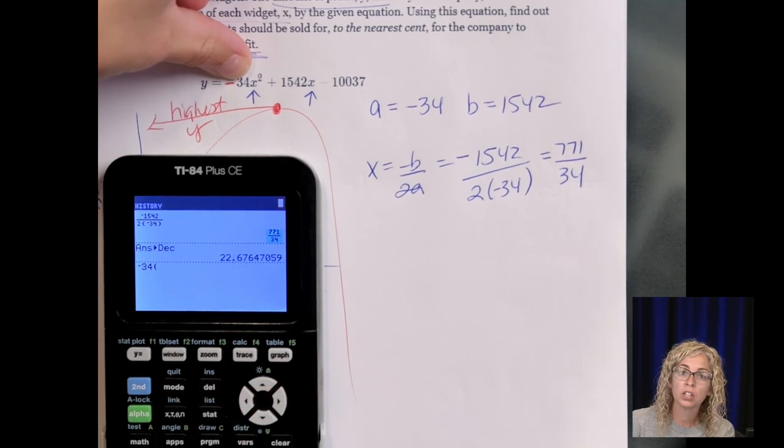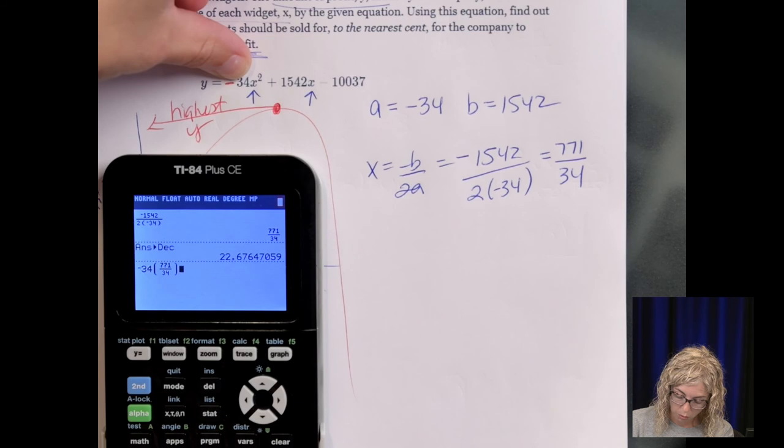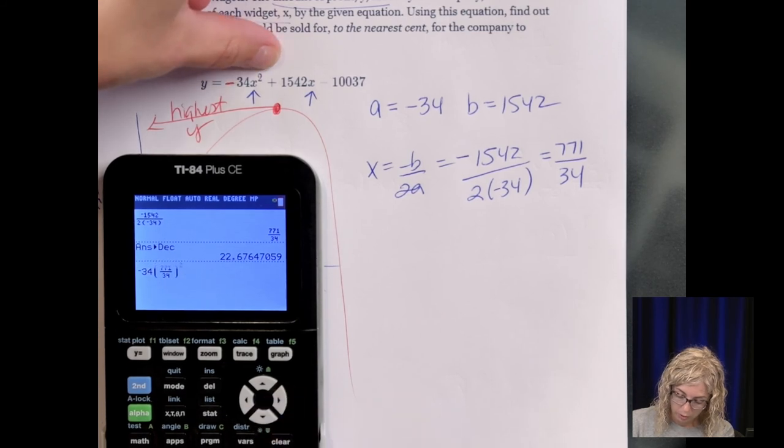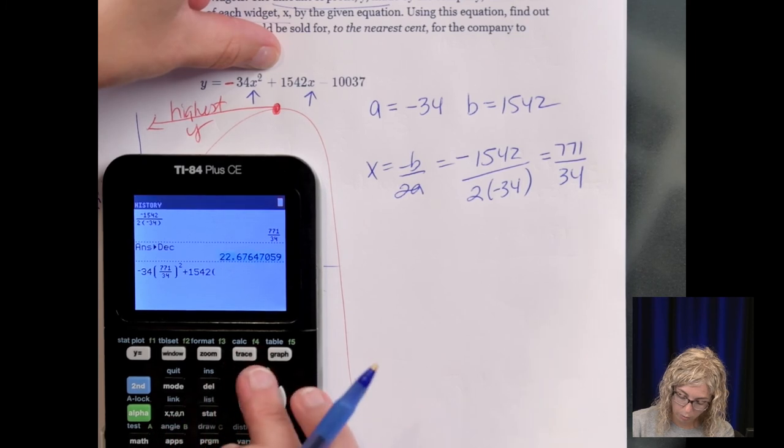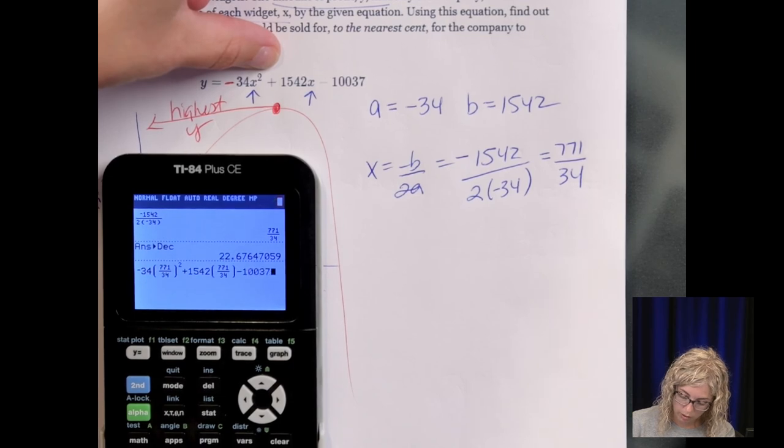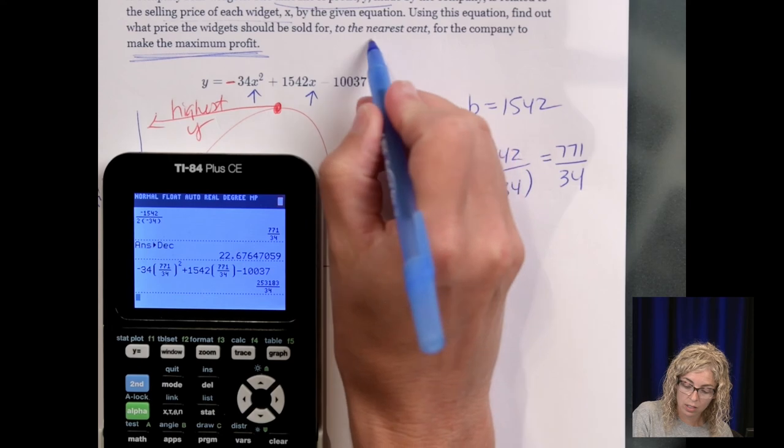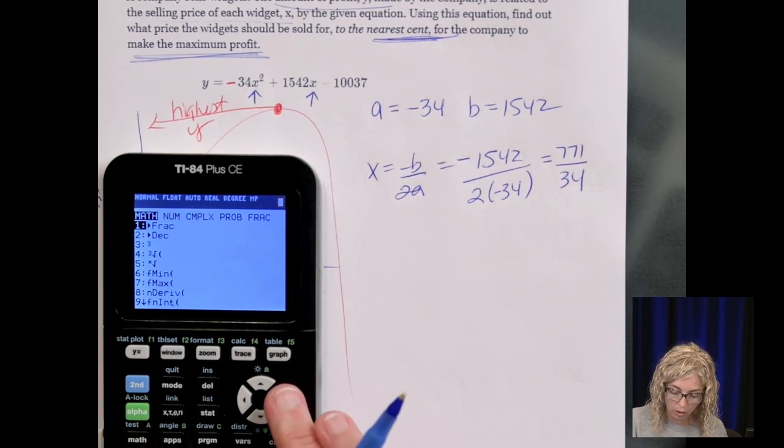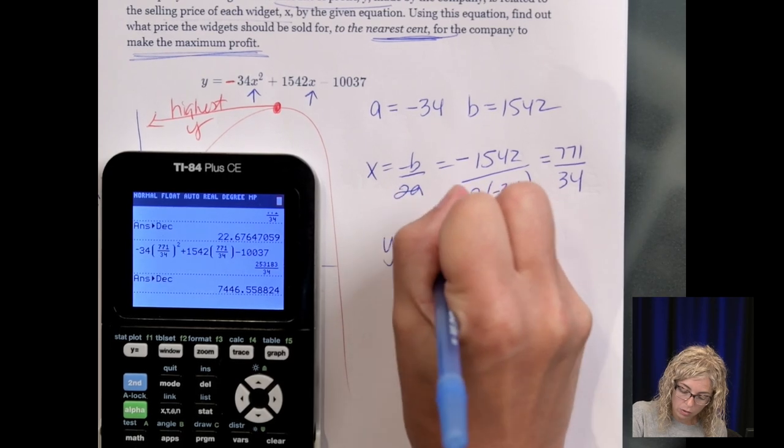And type in negative 34 and then go up and grab the fraction or you can type it in, squared, plus 1542 x so go up and grab it again and then minus 10037. And we get that but it wants it to the nearest cent so I am going to go math and change it to a decimal and we get y equals 7446.558824.